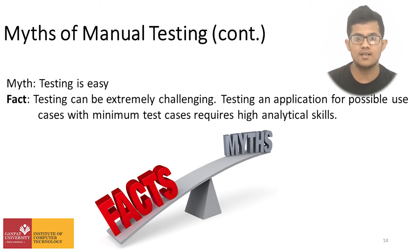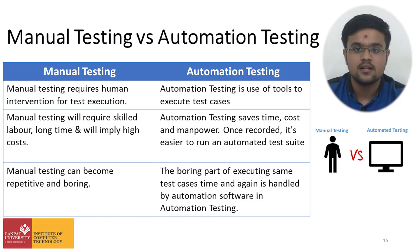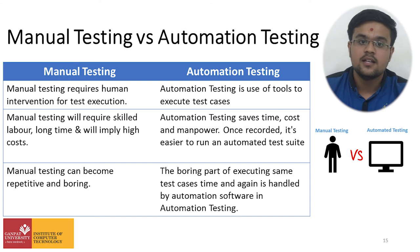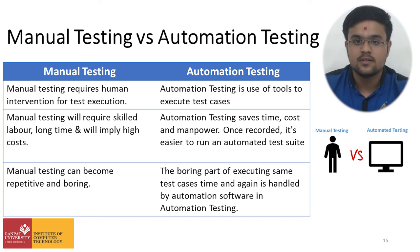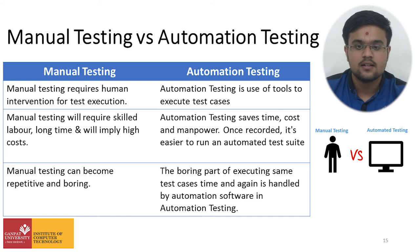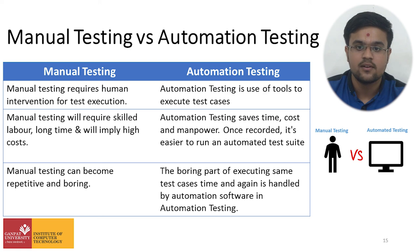Testing an application for all possible use cases with minimum test cases requires high analytic skills. There are mainly two types of testing: manual testing and automation testing. Manual testing requires human intervention for test execution, whereas automation testing uses tools to execute test cases. Manual testing requires skilled labor, long time, and implies high cost. Automation testing saves time, cost, and manpower. Once recorded, it's easier to run an automated test suite. Manual testing can become repetitive and boring, whereas in automation testing, the repetitive part of executing the same test cases again and again is handled by automation software.